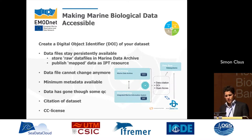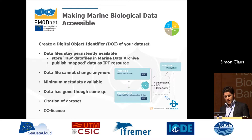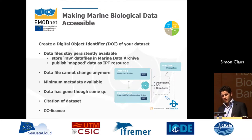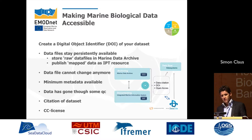For accessibility, we try to create a Digital Object Identifier (DOI) for the datasets we receive. The procedure is that raw data files are stored in an archive, and the mapped data files are stored via an IPT. When we create the DOI, we ensure the archive data file cannot change anymore, that minimum metadata is available, that the data has gone through quality control, that there is a unique citation, and that it has a CC license. The DOI is minted through a collaboration with DataCite.